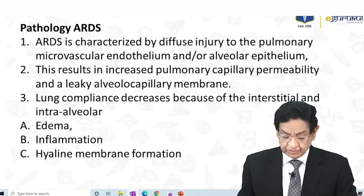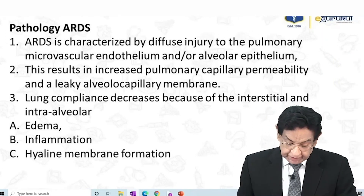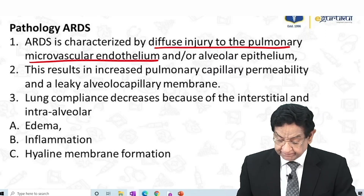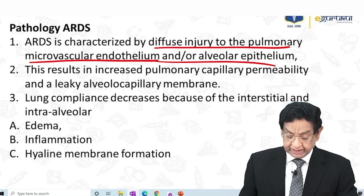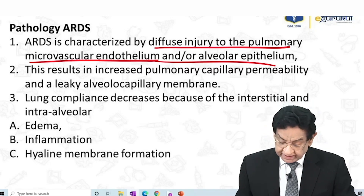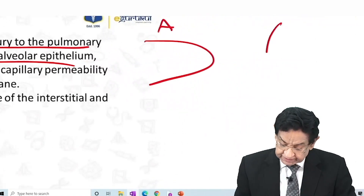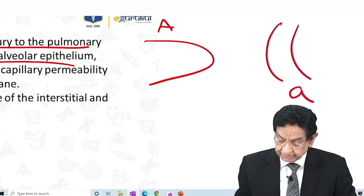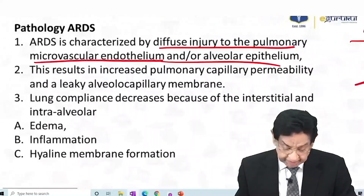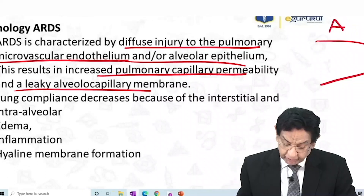ARDS is characterized by diffuse injury to the pulmonary vasculature endothelium and/or alveolar epithelium. Primarily, it is an injury to the endothelium and endothelial lining. Basically, there is increased permeability of pulmonary capillaries and a leaky alveolar-capillary membrane, so a large number of fluids will leak into the interstitial space.